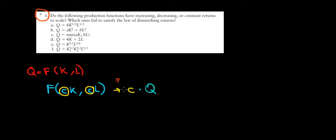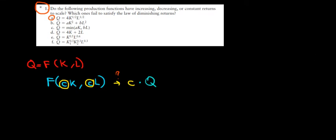That's just the intuition — the highlight. Let's apply it to some questions and see how it works out. For instance, let's take question A. We have the following production function, and we'll write what happens when we increase it by a certain proportion, then compare the results.